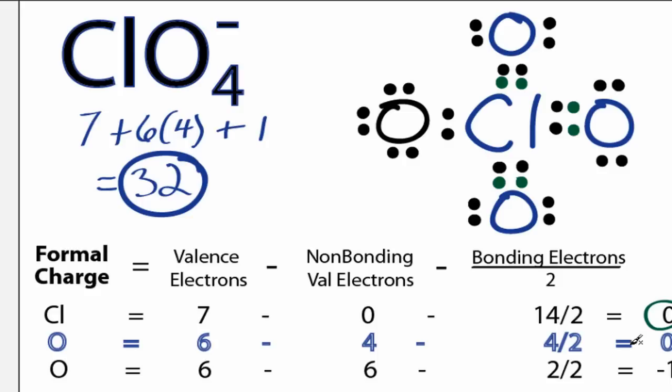Each of the oxygens has a formal charge of 0 as well, and this oxygen over here, the one with the single bond, has a formal charge of negative 1. That makes sense, because we have this negative 1 here.